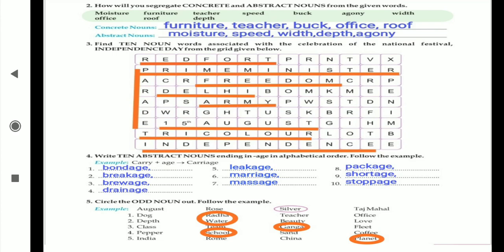Like that we are going to write down ten examples which are going to end with 'age', which we are going to join suffix to that word: bondage, breakage, bridge, drainage, leakage, marriage, message, package, shortage, and stoppage. All words you can see are ended with 'age'.